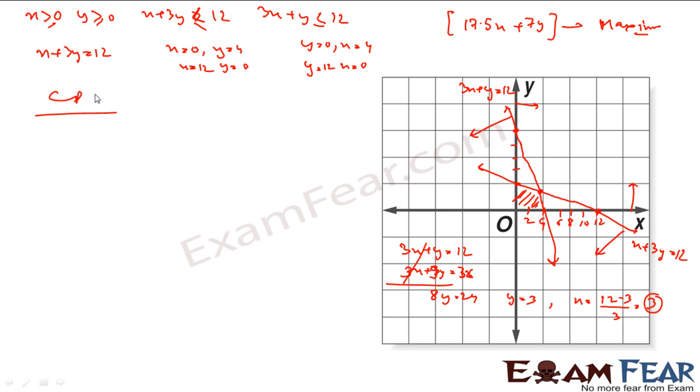So my points are: my common points are 0, 0 is one point. This point 4, 0 is one point. This point 3, 3 is one point, and 0, 4 is this point. So I have 4 points.